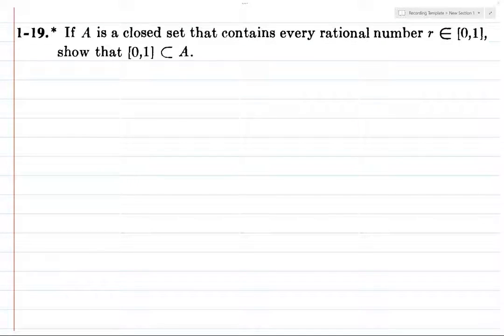All right, if A is a closed set and it contains every rational number between 0 and 1, then [0,1] is contained in A.